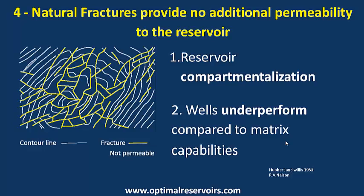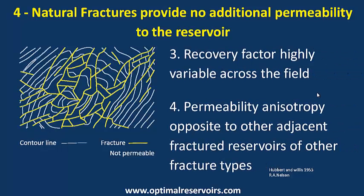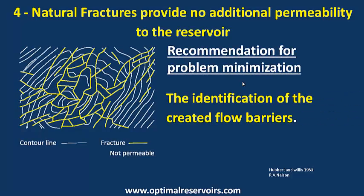The fourth type is where natural fractures provide no additional permeability to the reservoir. Problems caused include reservoir compartmentalization, wells underperforming compared to matrix capabilities, recovery factor being highly variable across the field, and permeability anisotropy as opposed to other adjacent fractured reservoir types. To minimize these problems, we need the identification of created flow barriers.